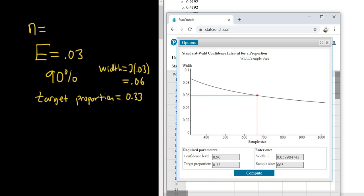There's the answer, 665. By the way, if they don't give you anything here, like if they don't give you the target proportion, you leave it as the default, which is 0.5. Watch.